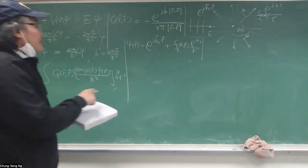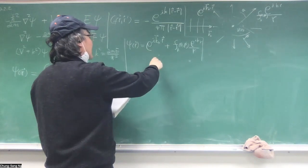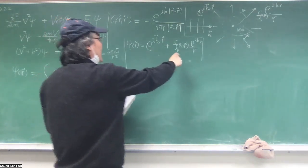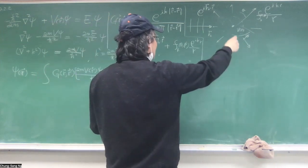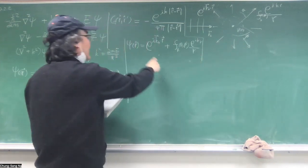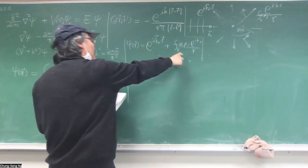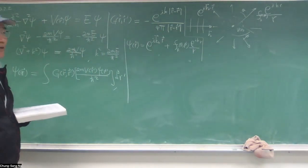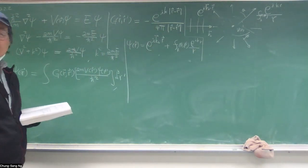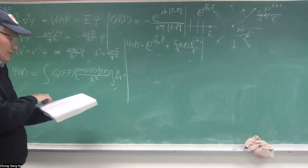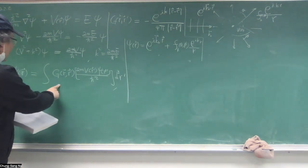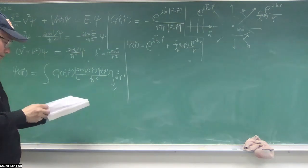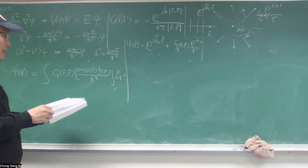But this is, you assume, if, the idea is that the scattered wave is not too strong, so mainly is the incoming wave, some of them scattered, scattered away. So you can apply the perturbation to treat the integral part, integral solution, the integral equation.